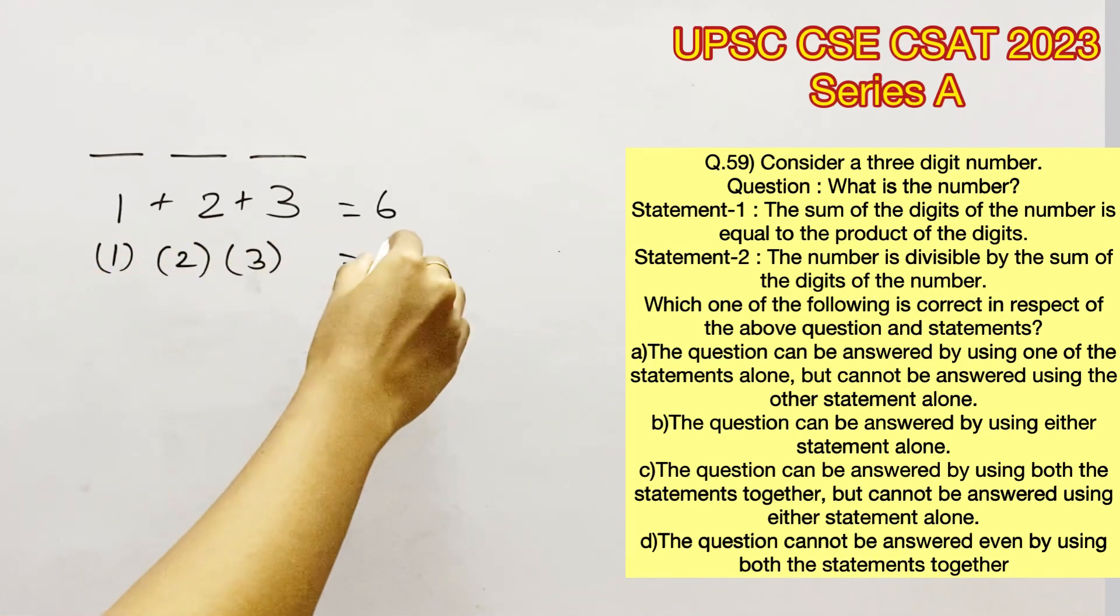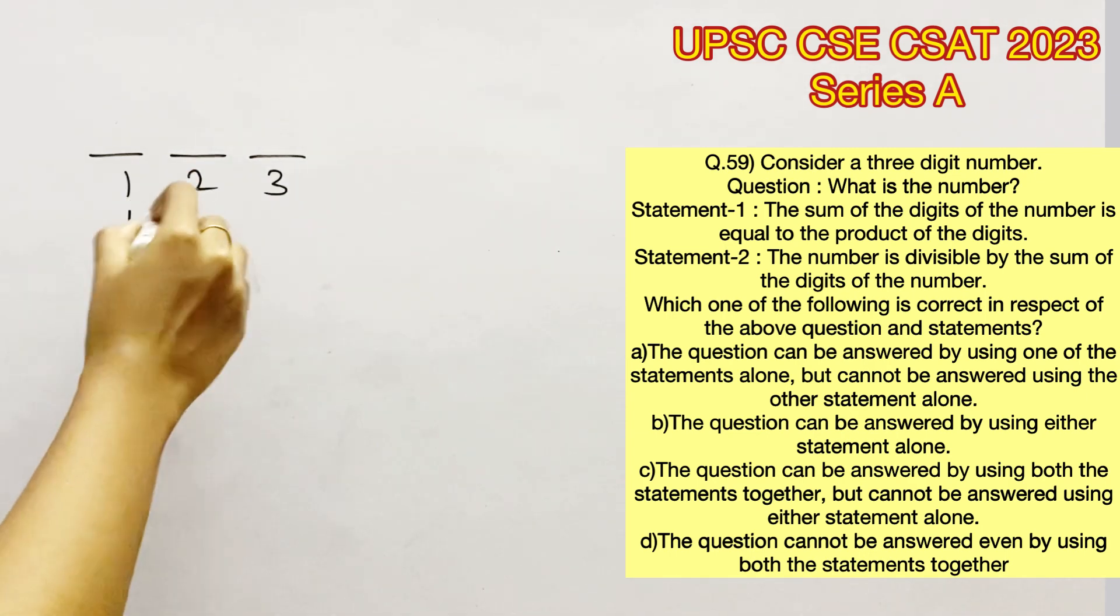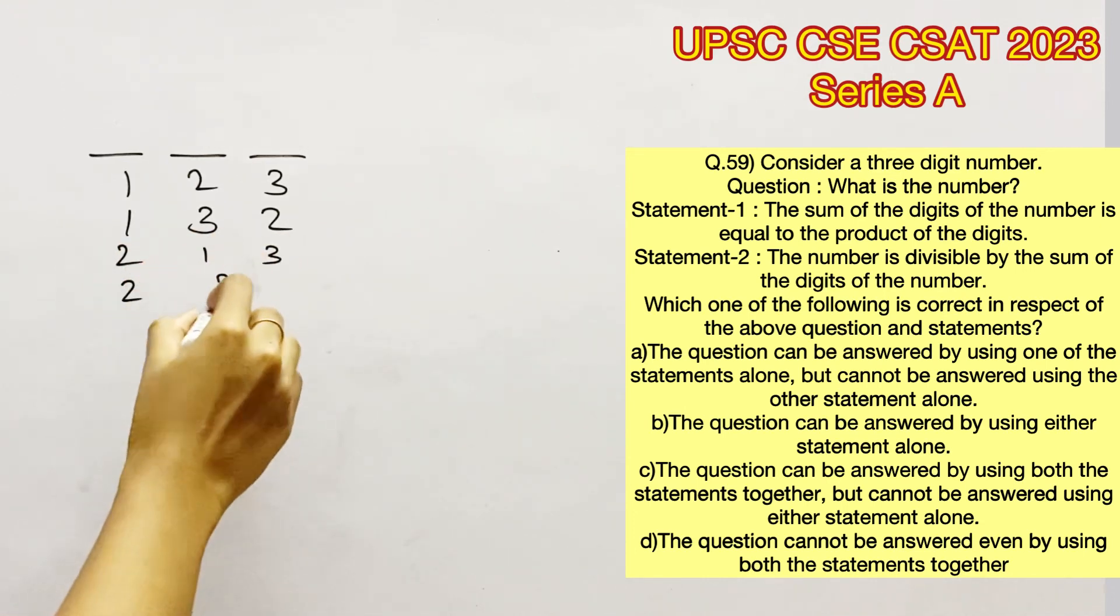If we are considering non-zero digits, these are the only three numbers that will satisfy this condition, so it's better to remember them for any competitive exam. Now the three-digit numbers that are possible with these three digits would be 123, 132, 213, 231, 321 and 312. Therefore statement 1 alone is not sufficient to answer this question.